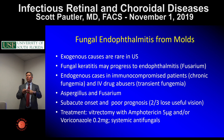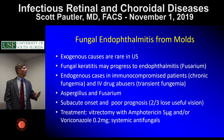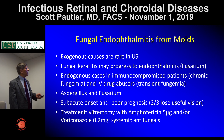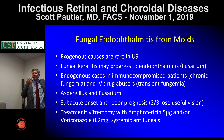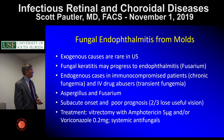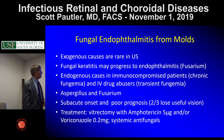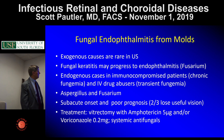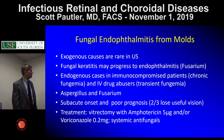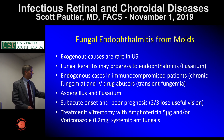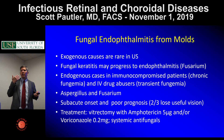Fungus includes molds and yeast. For fungal endophthalmitis from molds, exogenous cases coming through the cornea are rare, but Fusarium is known to cause this. Endogenous mold cases are often, but not always, in immunocompromised patients with chronic fungemia. IV drug abusers are another group at risk. Aspergillus and Fusarium are the common organisms. The disease tends to be subacute but prognosis is poor. Treatment typically includes vitrectomy, amphotericin, voriconazole, and systemic antifungals.